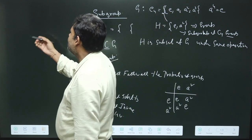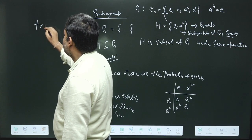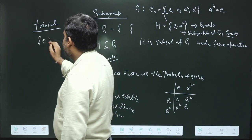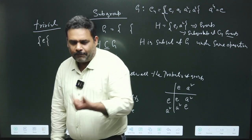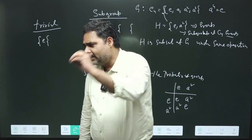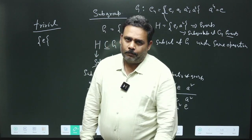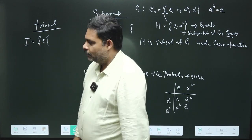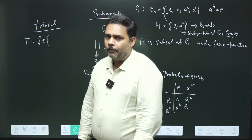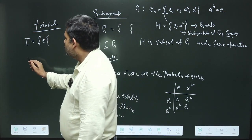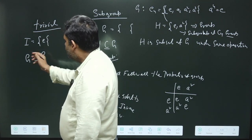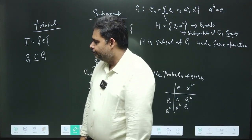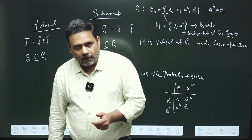We can mainly divide subgroups into two types. First is the trivial group. The trivial group is very simple — you know that the identity element, if we pick just the identity element, that will always be a subgroup of every particular group. That will always be a subgroup and this is obviously a one-dimensional group. We also note that G is also a subset of G, so G will also be a subgroup of G. These two are very trivial.